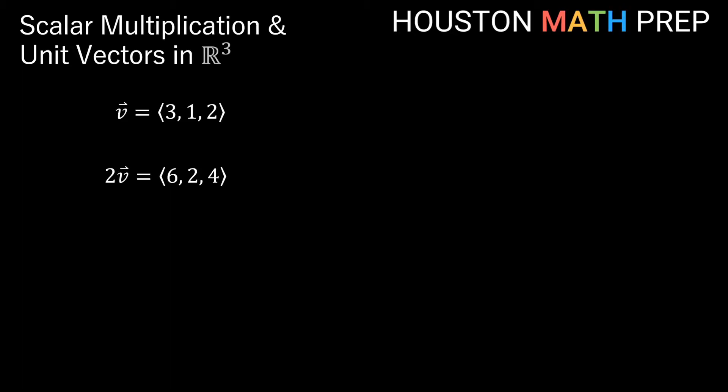Thinking geometrically about what scalar multiplication does, let's figure out the magnitude of vector v. We did this in one of our previous videos — the magnitude of a vector is its length. Using the formula for magnitude, we square each component, add them all up, and take the square root. So for vector v, we get the square root of 3 squared plus 1 squared plus 2 squared, which ends up being the square root of 14.